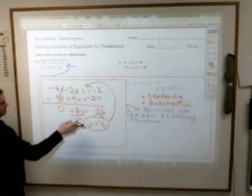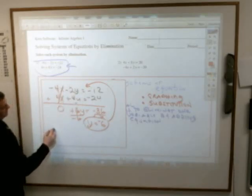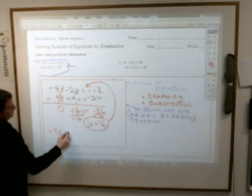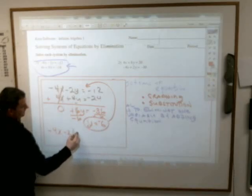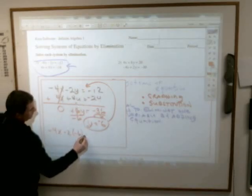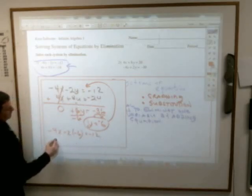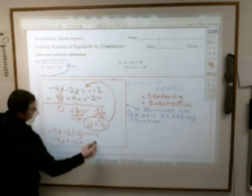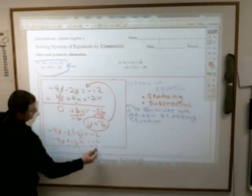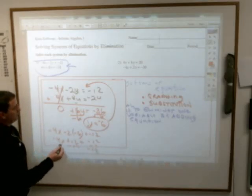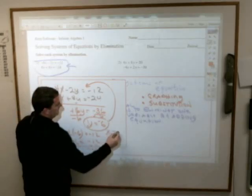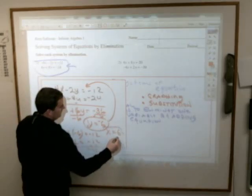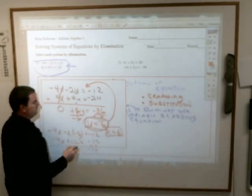So unfortunately, this part actually becomes a little more tedious, but not so much. Negative 4x minus 2 times what y is equals negative 12. You end up with a negative 4x plus 12 equals negative 12. Subtract 12, subtract 12, negative 24. Negative 4 and a negative 24, x equals a positive 6. And y equals a negative 6.